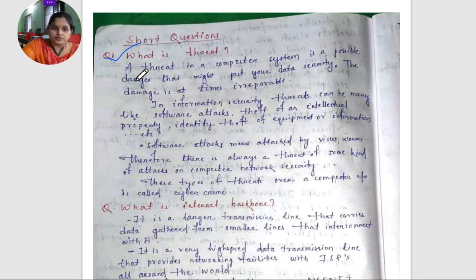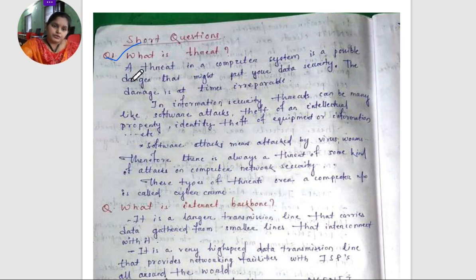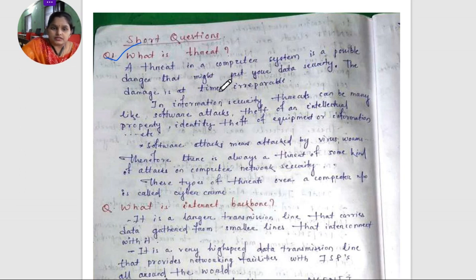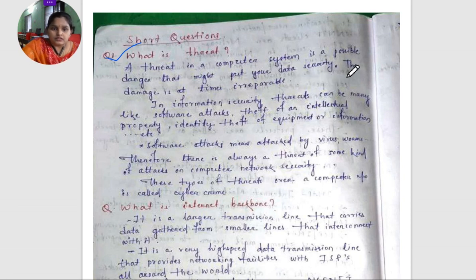The first question is: what is a threat? A threat in a computer system is a possible danger that might exploit your data security. The damage is at times irreparable.